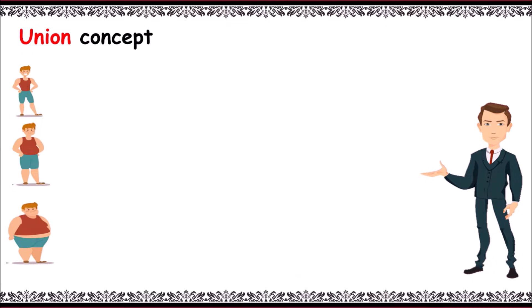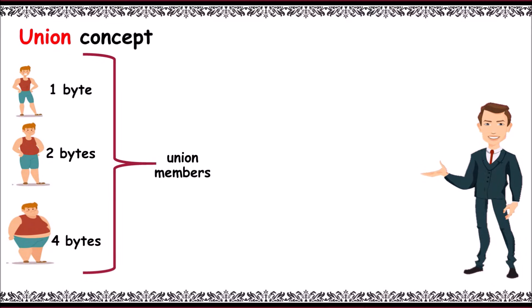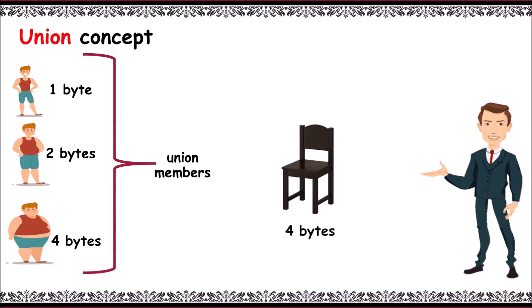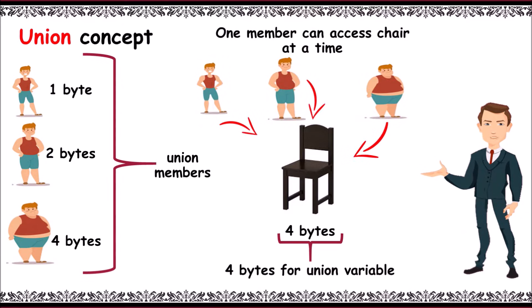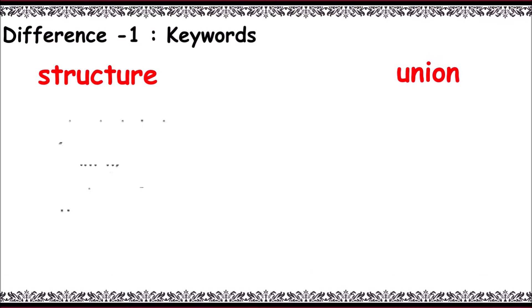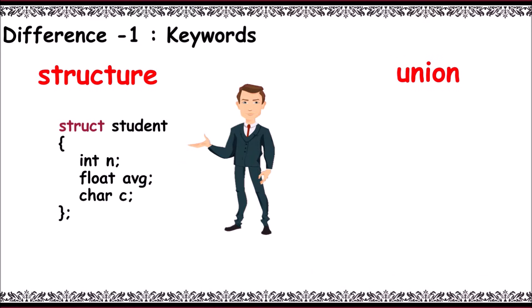Now the union concept: consider three members of size 1, 2, and 4 bytes — they are union members. When we create a union variable, it allocates memory of the member with the larger size. Hence one chair is available with 4 bytes — so 4 bytes for the union variable. An important aspect of union is that only one member can have access to the chair at a time.